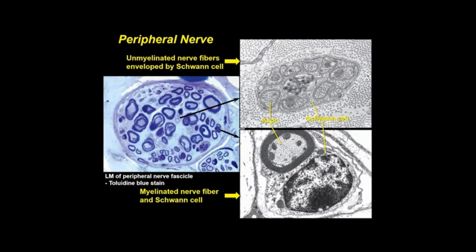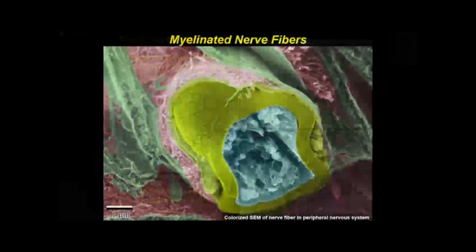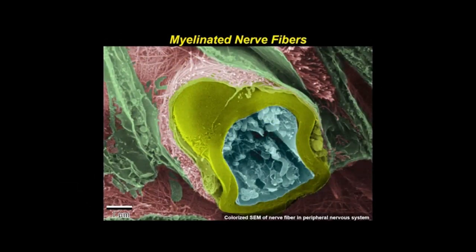Schwann cells are the principal supporting cells of the PNS. They surround all nerve fibers, both unmyelinated and myelinated. Unmyelinated nerve fibers are typically grouped and held together by Schwann cells, whereas fast-conducting myelinated nerve fibers have single Schwann cells dedicated to segments along their length. By SEM, the components of a myelinated peripheral nerve fiber consist of the axoplasm in blue, surrounded by the myelin sheath of a Schwann cell. Collagen fibrils of the endoneurium and flattened perineurial cells are seen in the adjacent tissue.